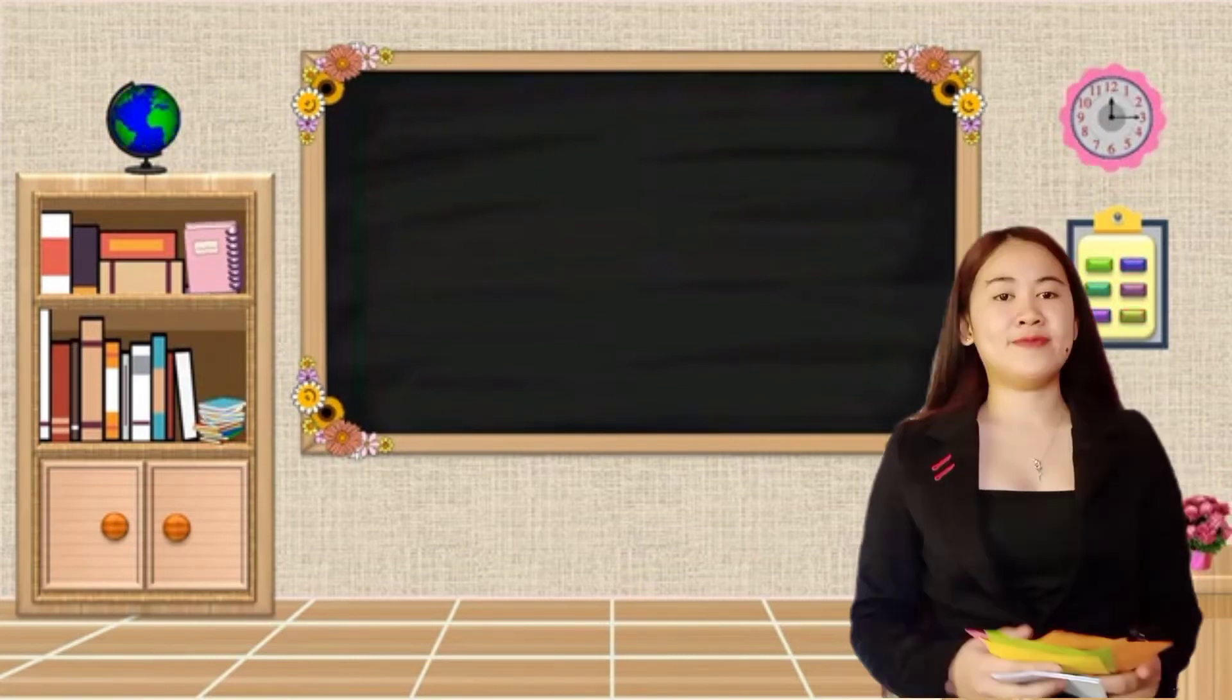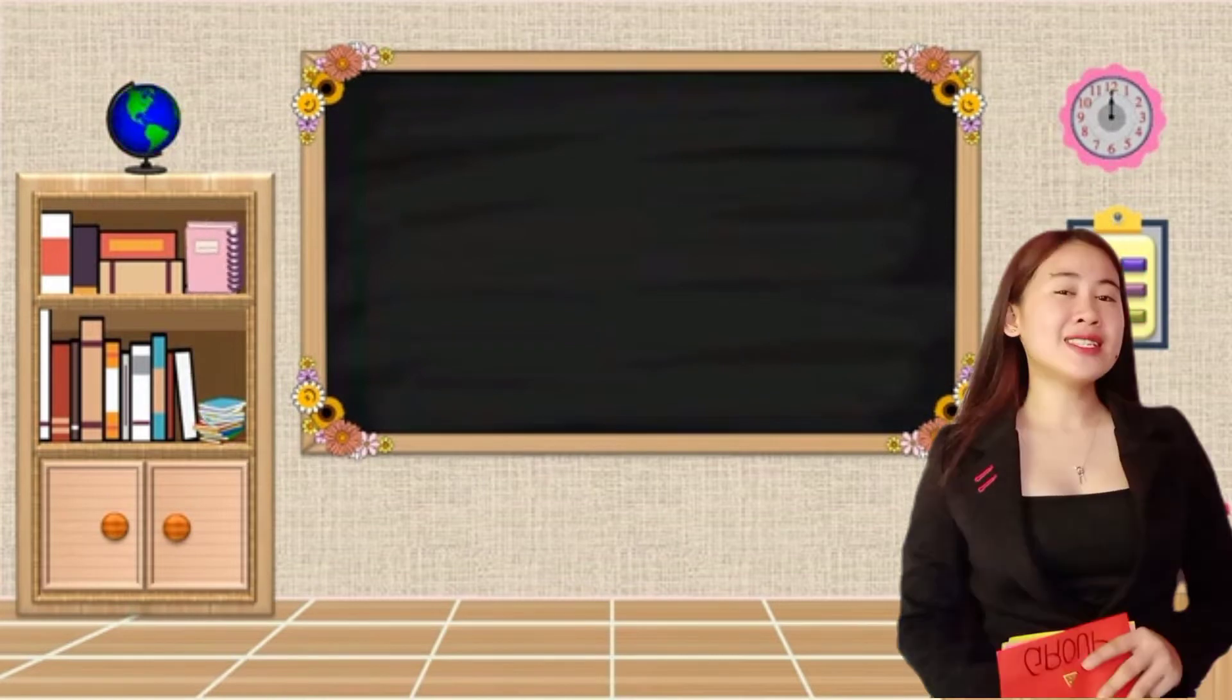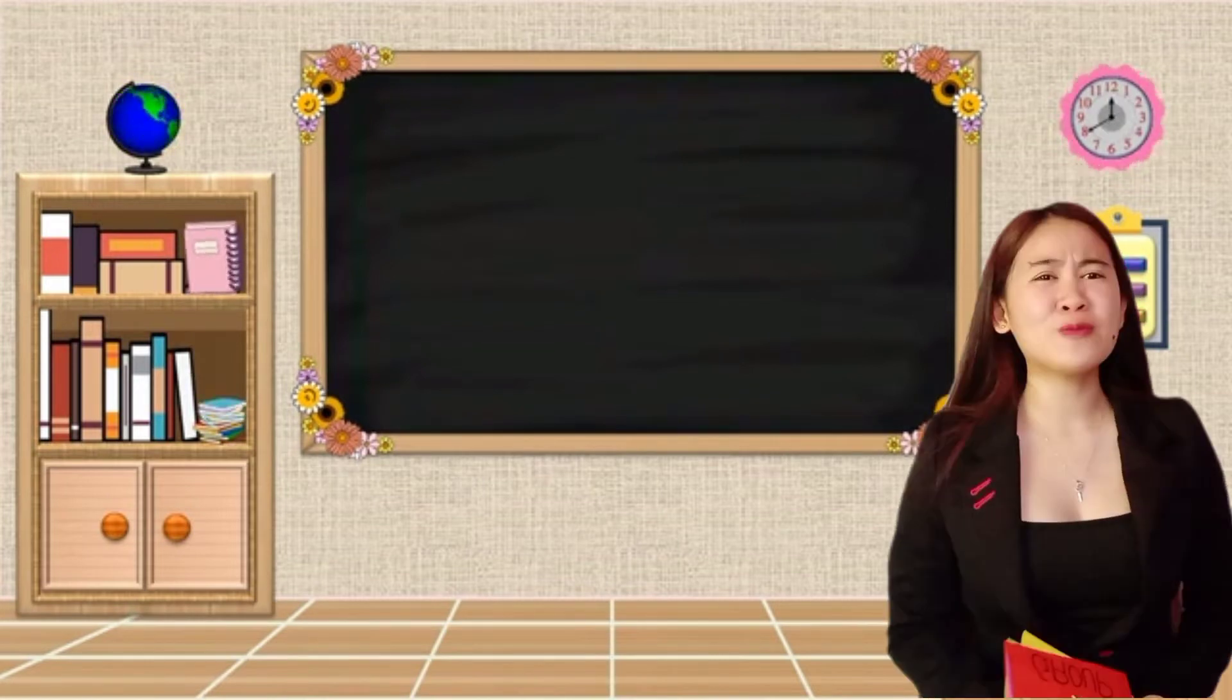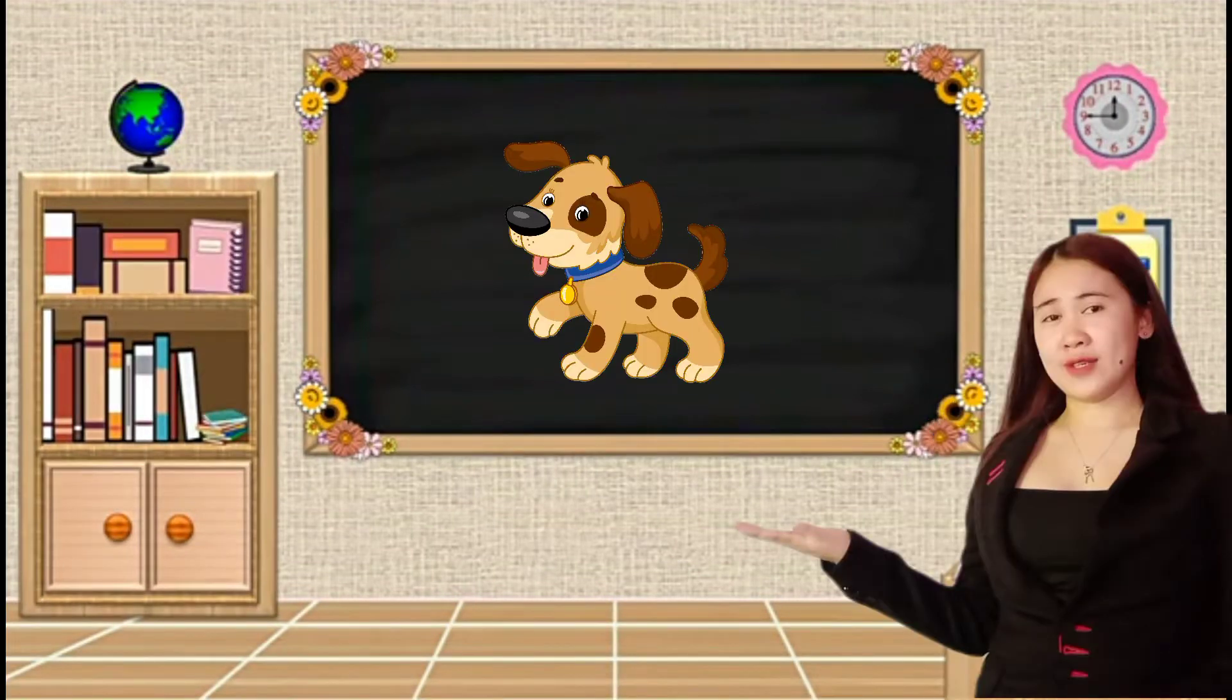Okay, very good. You're able to finish the task on time. So, this time, you will identify what thing is it. Okay? So, these following pictures are the things that we can see everywhere. So, what is this thing? Group one. What is this? Very good. It is a dog.